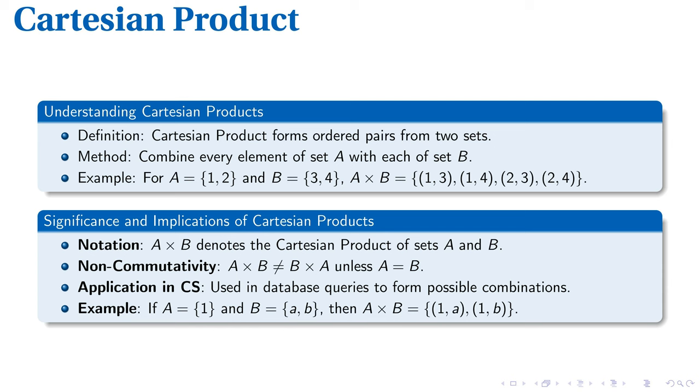Notice the operation is non-commutative. A × B isn't equal to B × A. Its importance isn't purely theoretical. Cartesian products are integral in database queries, forming possible combinations to peruse. Consider A = {1} and B = {A, B}. We get A × B = {(1, A), (1, B)}, exemplifying its utility.